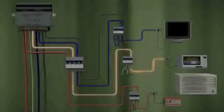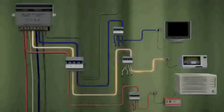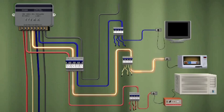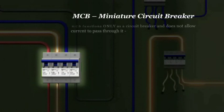What you see is an accustomed electrical setup in our home, with all appliances connected through MCB. A miniature circuit breaker functions only as a circuit breaker and restricts the current to pass through it only during overloading or short circuit.